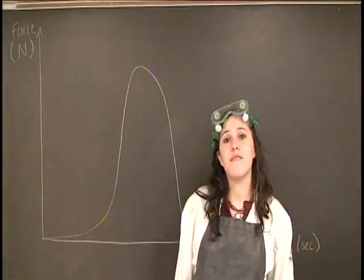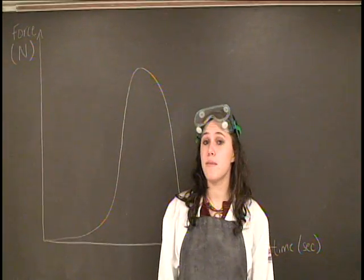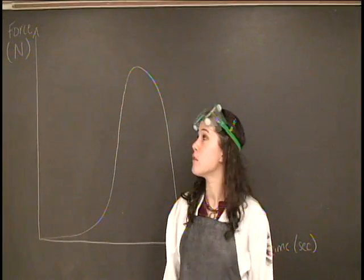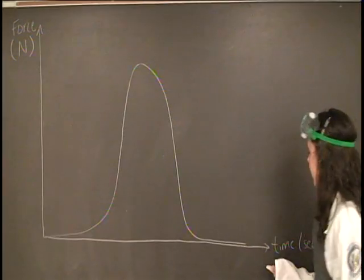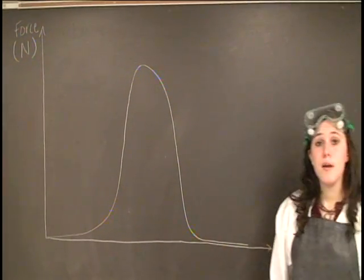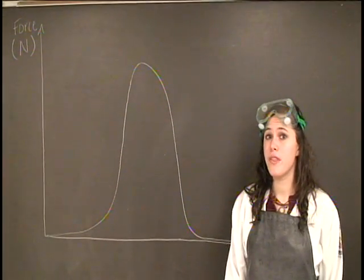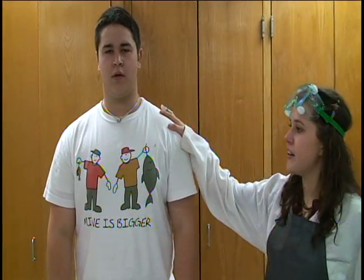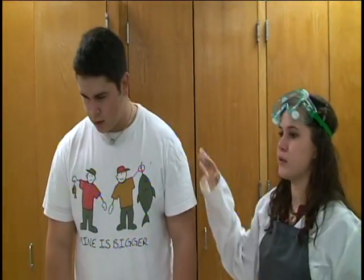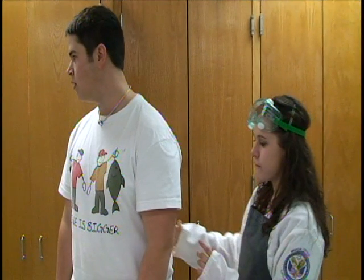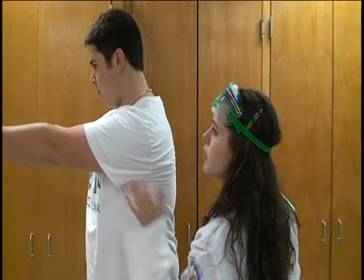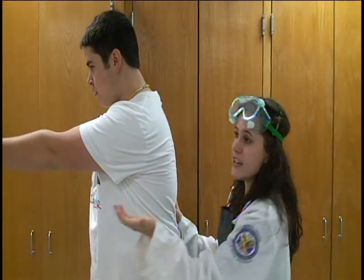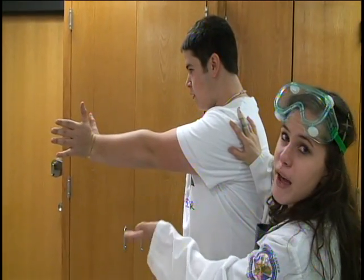The reason we have airbags can be explained by the Impulse Momentum Theorem. The impulse is the force times the change in time. Airbags increase the time interval, thus decreasing the force of impact. To show how this theorem can be applied, we're going to push Matt here on a skateboard into a force plate. First, he will have his arms out straight, and this resembles no airbag.